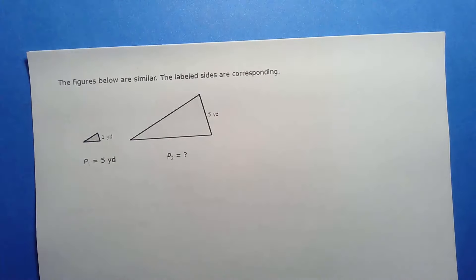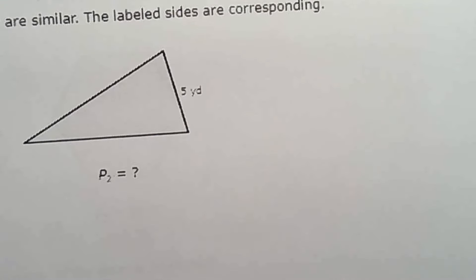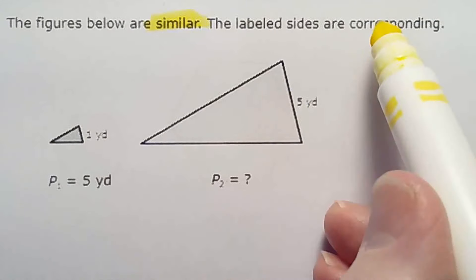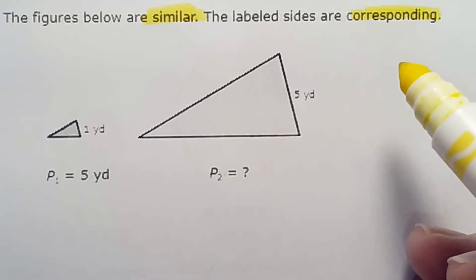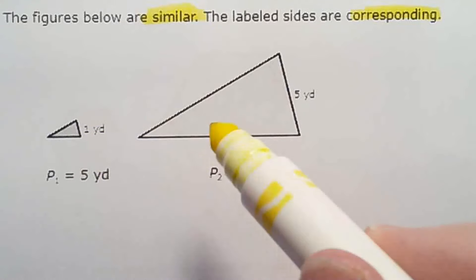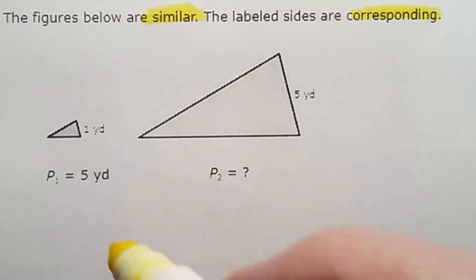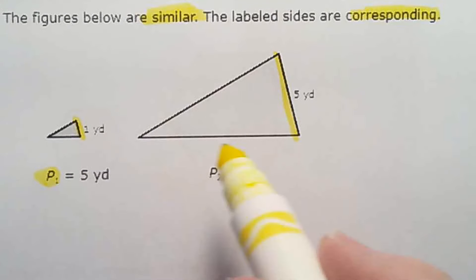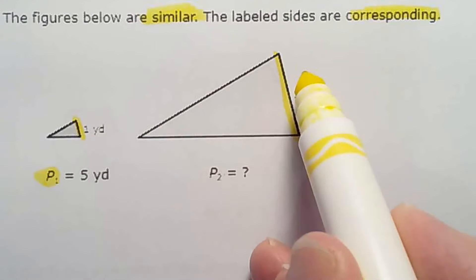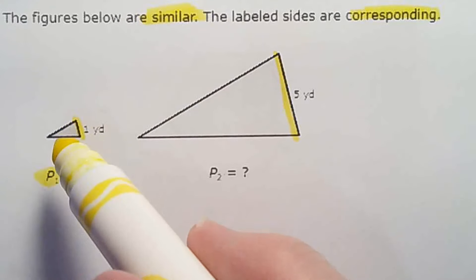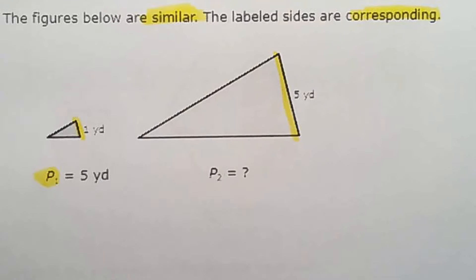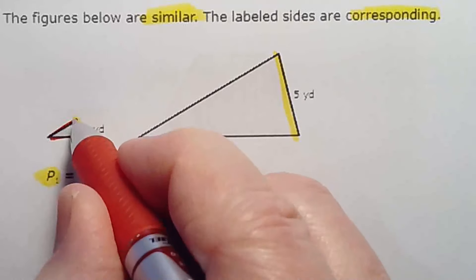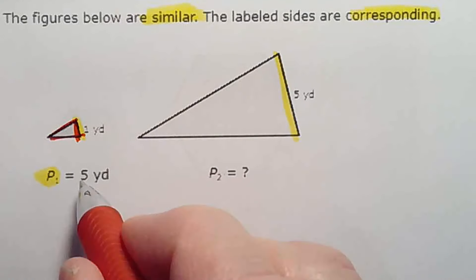First problem. They are similar and the labeled sides are corresponding — make sure those conditions are satisfied. They have to be similar and the side lengths you know have to be corresponding. We know this side and this side. We're talking about the perimeter. This five yards compared to that one yard — and by random coincidence, the perimeter of the small triangle is also five yards. Once around this little triangle is five yards.